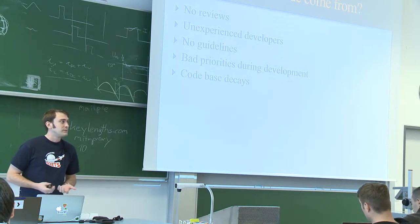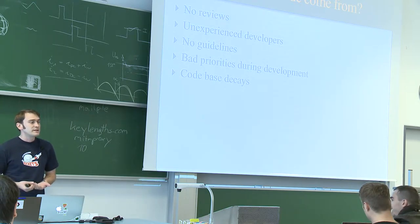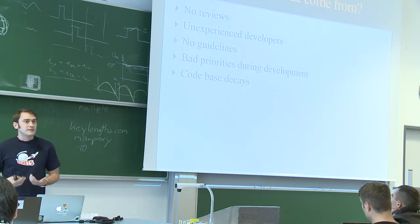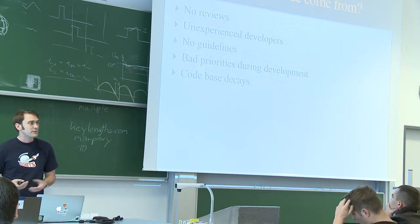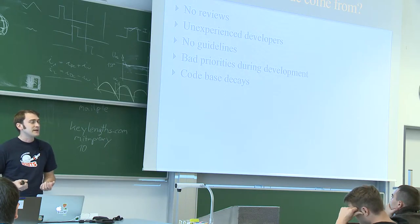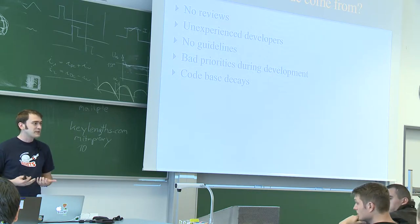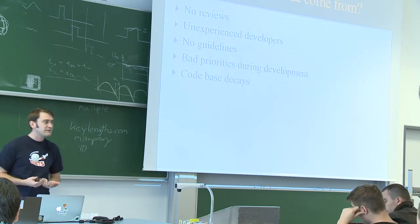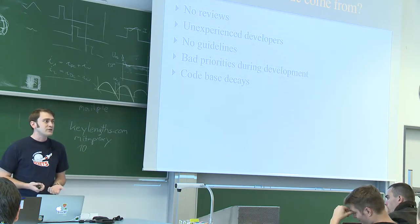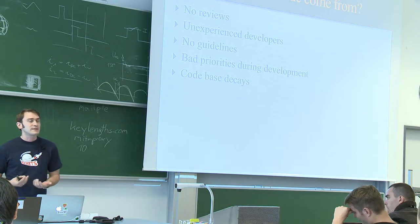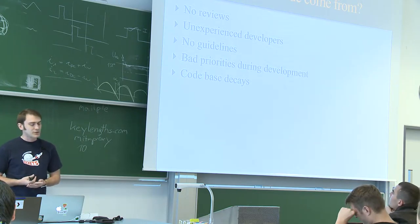Then there are no guidelines. Bad or good code for the team is mostly something that can't be put into really concrete words. So your team has to decide what kind of code style you want to have, what kind of code is good for you, and that should be put into some kind of guideline that all team members know — this is what we decided good code is for us.